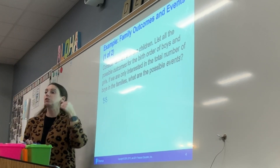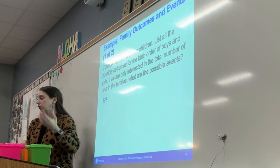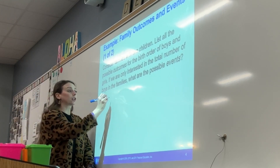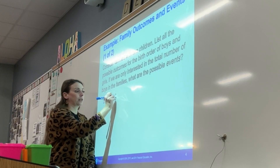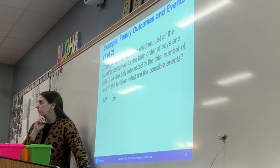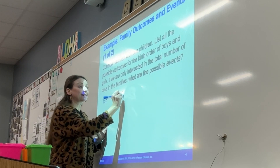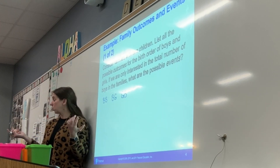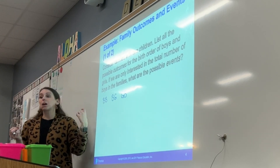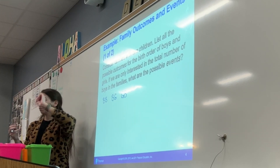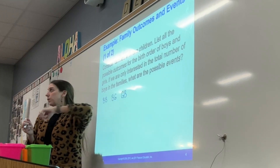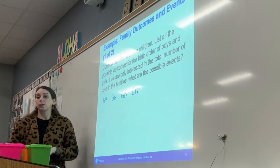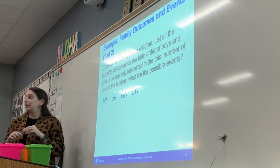What else could we have? A boy and then a girl. And then a girl and a boy — is that different than boy-girl? Yes, because of the order. So when we list all the possible outcomes, we want to think about the order mattering. What else could we have as an outcome? Girl, girl. Are there any other outcomes? No. Okay, so those are our outcomes: boy-boy, boy-girl, girl-boy, girl-girl.